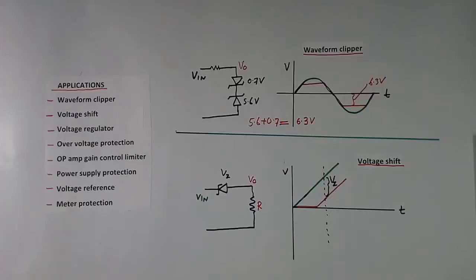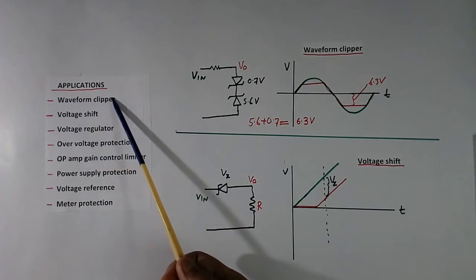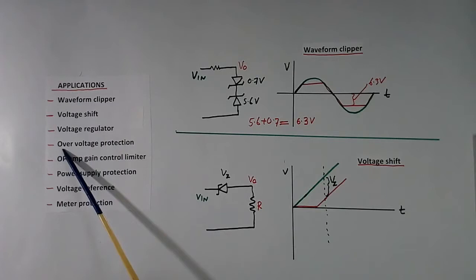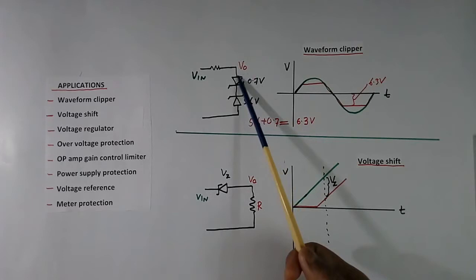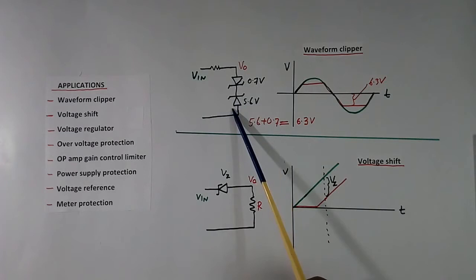Now we come to applications. This is list of 8 applications: waveform clipper, voltage shift, voltage regulator, over voltage protection, operational amplifier gain control limiter, power supply protection, voltage reference, meter protection. Out of 8, 2 are shown here, remaining 6 are in other sheets.